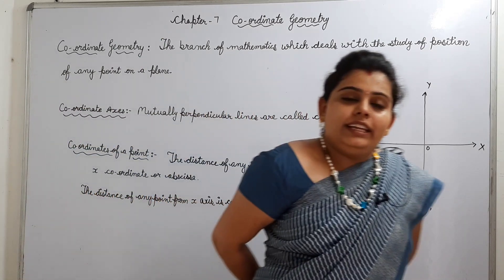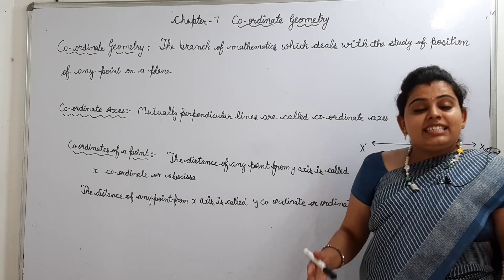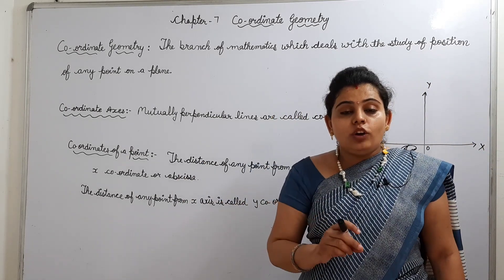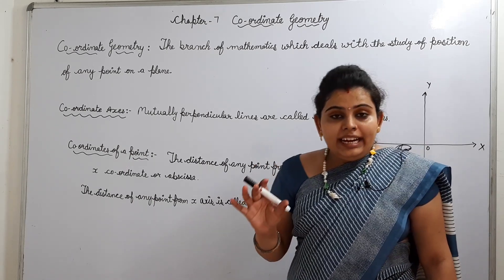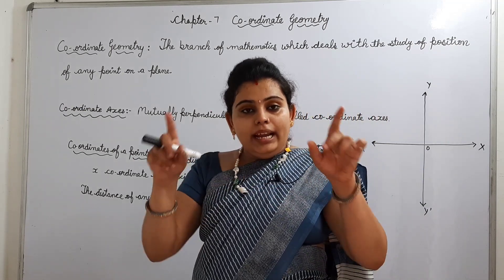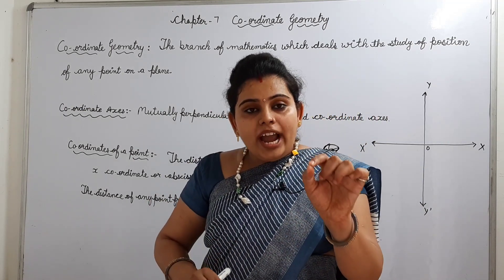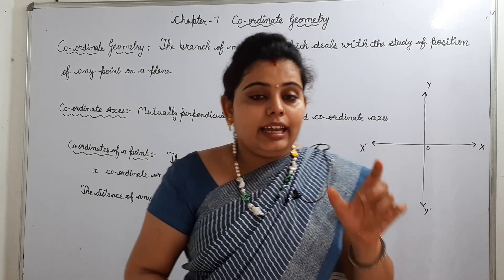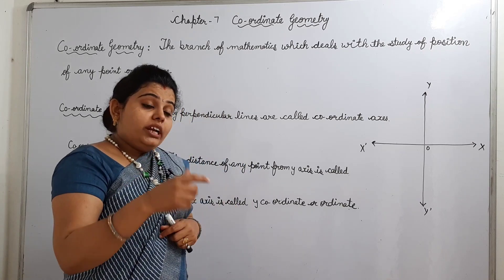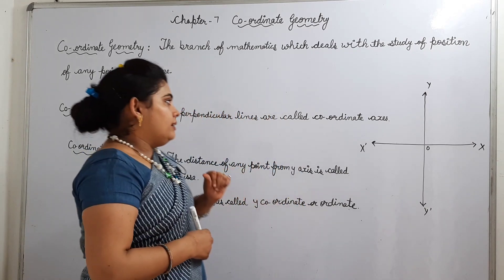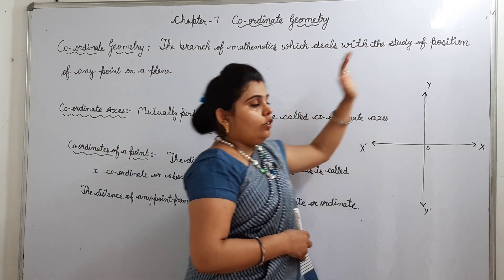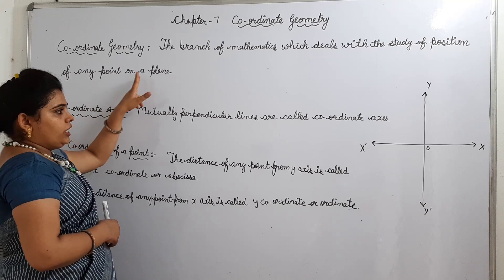What do you mean by coordinate geometry? Coordinate geometry is a branch of mathematics which deals with the study of a point in a plane. Coordinate geometry mathematics की एक ऐसी branch है, जिसमें हम एक plane surface पे एक point के बारे में study करते हैं, उसकी position और location check करते हैं - कि वो point कौन सी position पे lie करता है.